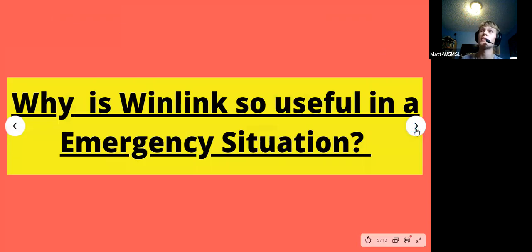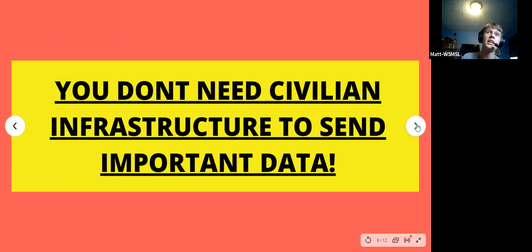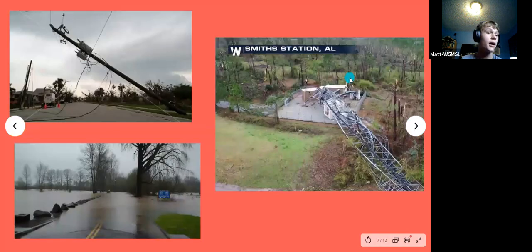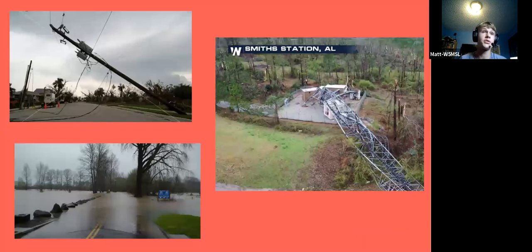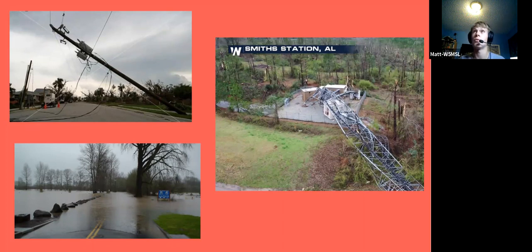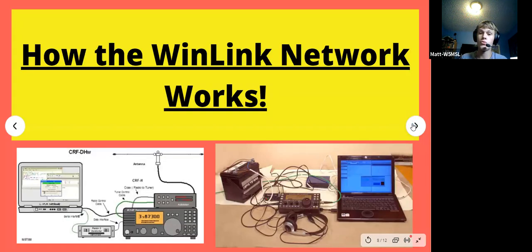Why is Winlink so useful in an emergency situation? You don't need civilian infrastructure to send important data. In Oklahoma and hurricane-affected areas, if it's bad enough there can be telephone lines down, cellular outages, and all kinds of natural disasters that interrupt normal communication - mainly the internet. The reason Winlink is so useful is because you don't need internet to actually send an email.